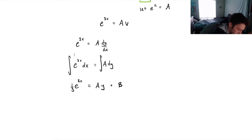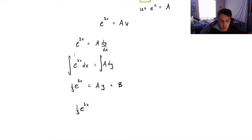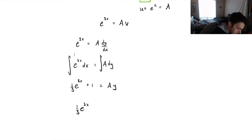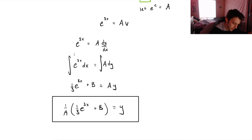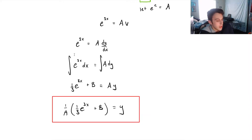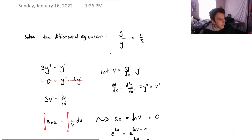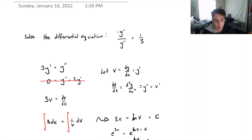Now we just have to rearrange to get our final answer. We get (1/3)e to the 3x minus B, all divided by A, equals y. What are the constants A and B? We would be able to figure this out if we were given initial values to the problem. So this is how you turn a second order differential equation and use quick substitutions to make it into two easy, separable, first order differential equations.